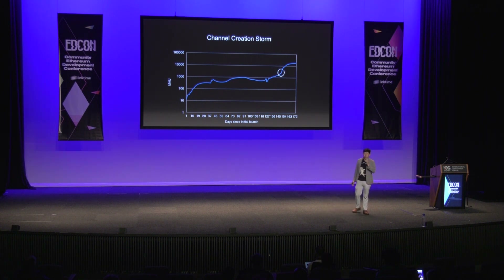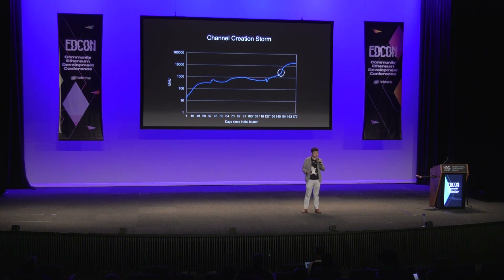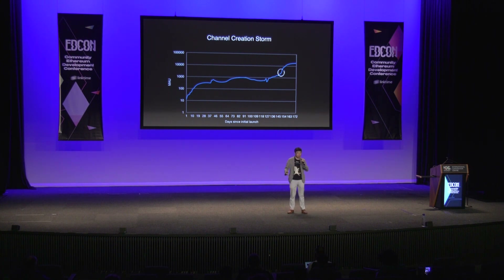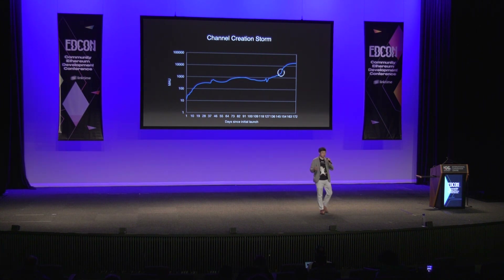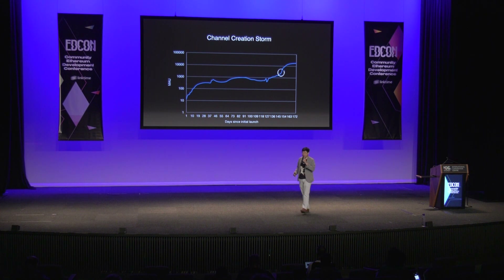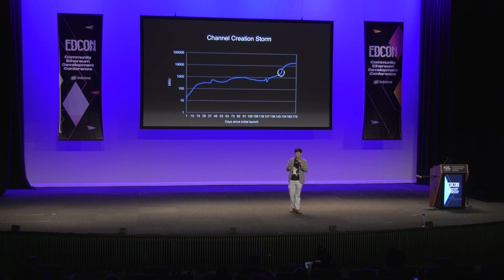After the Binance Launchpad announcement, we saw a channel creation storm — literally thousands of people trying to open state channels at the same time with our off-chain service providers. It created a big issue in terms of event monitoring because TCP connections have timeouts and phones are not always reliable. That caused another event monitoring issue and turned away a lot of users who were confused about what was going on and why they couldn't get onto Celer. We didn't tell users upfront what was happening, and that bit us — the highest rate we turned away users was more than 50%.